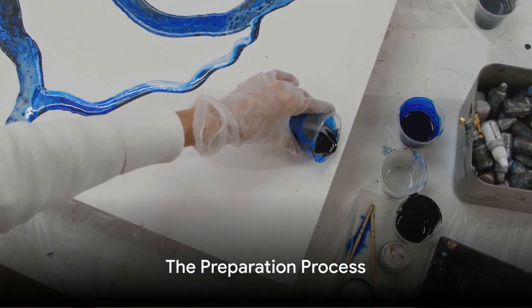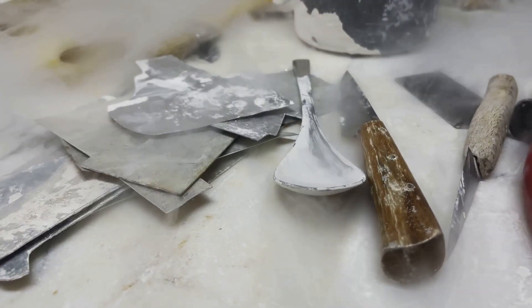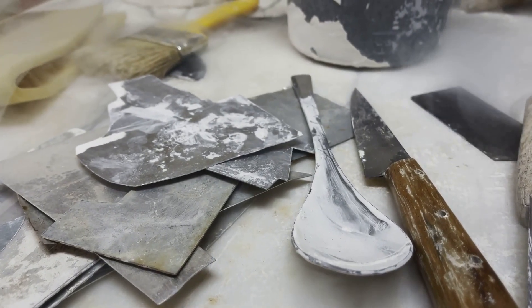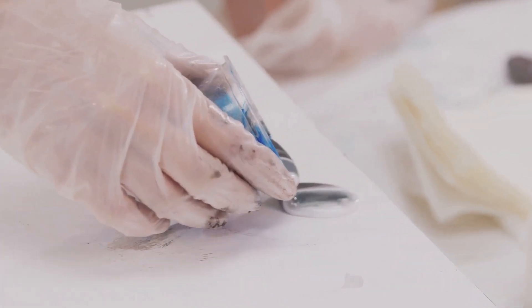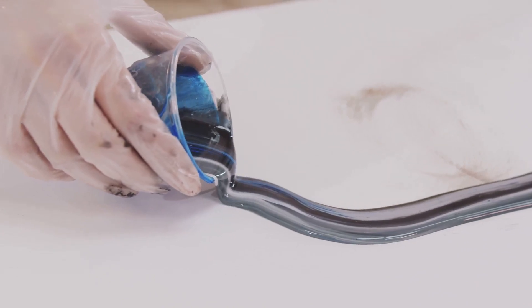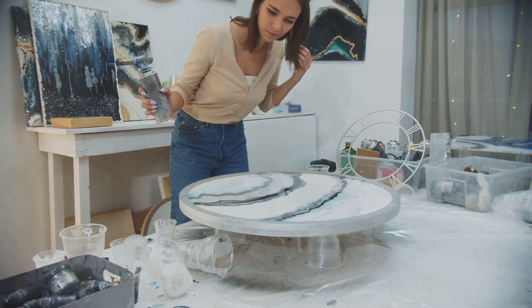Let's start at the beginning. Before the pouring and swirling, there's the preparation. Like a chef gathering ingredients for a culinary masterpiece, a resin artist must assemble their tools. This includes high-quality resin and hardener, mixing tools, and molds or surfaces for your art. A dust-free, well-ventilated workspace is also crucial for a successful resin art project.